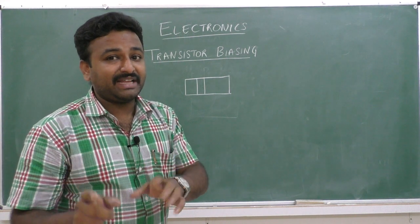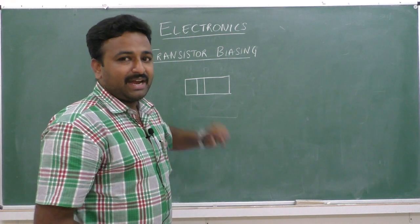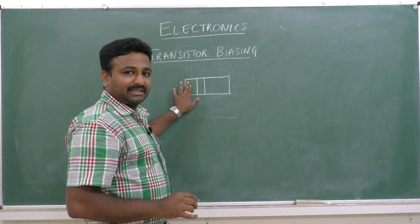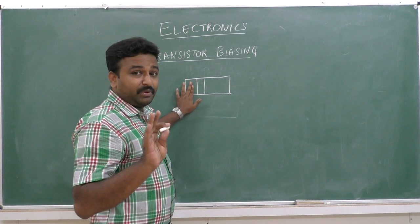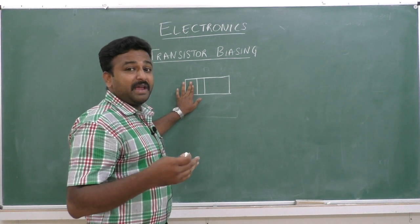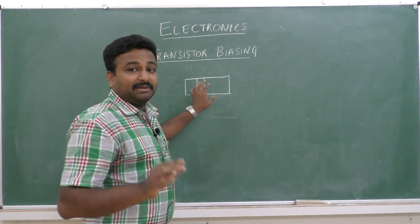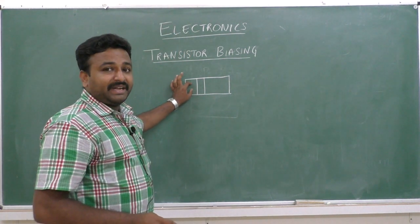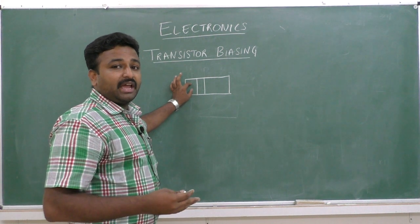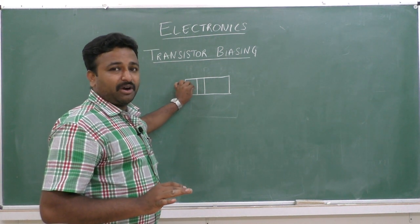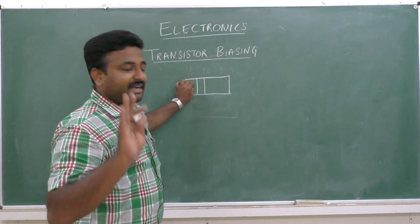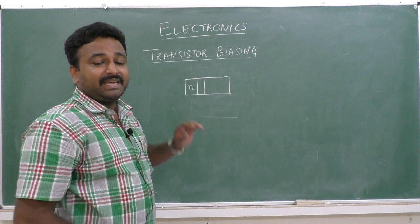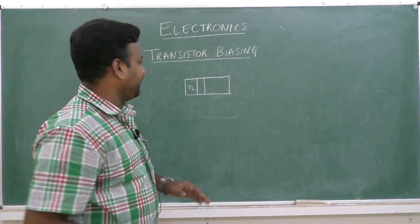In the NPN transistor, the moderate-sized region of the intrinsic semiconductor is doped with pentavalent impurities in a heavy quantity. It is a heavily doped region. Therefore, this becomes an N-region with a high doping concentration.